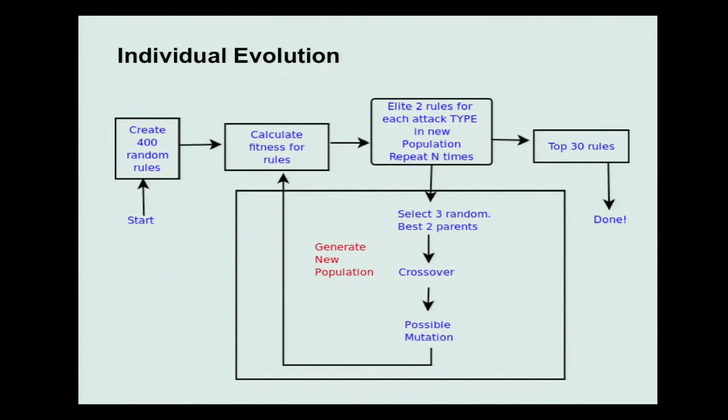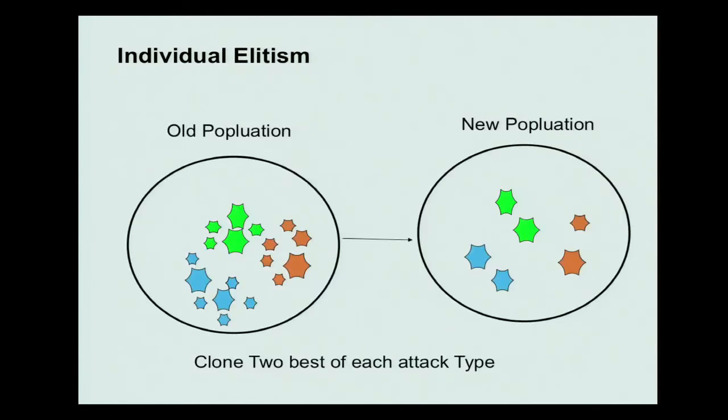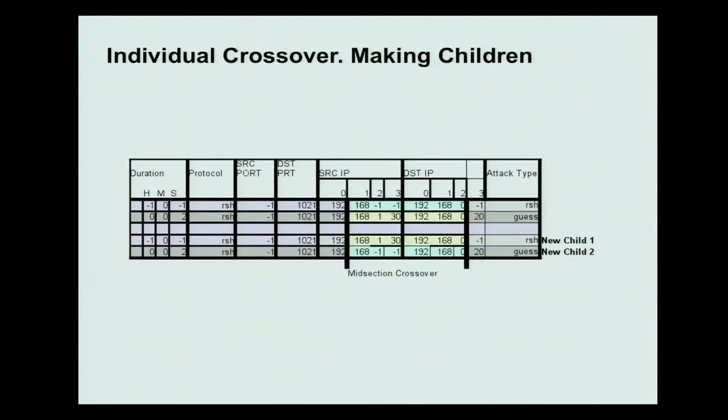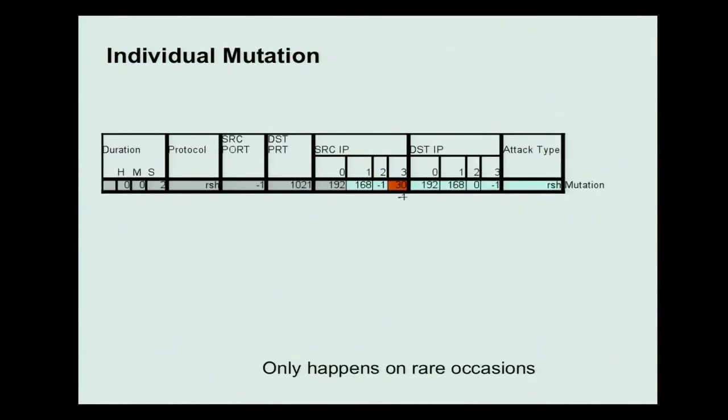We start with a population, and then we create a new population through a process. First, because we're trying to evolve to identify multiple types of attacks, I chose to actually take the best two rules of each type of attack and copy it over into the next population. So if we have 400 rules and six types of attacks, we'll have 12 best rules copied over. Then we go through the process of recombination. We pick three random individuals, the two best of each appearance.